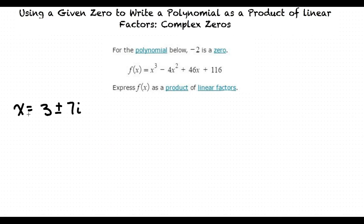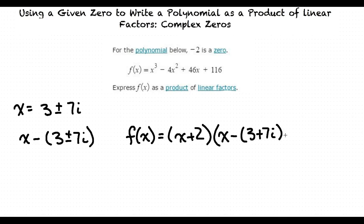Because we get x equals 3 plus or minus 7i, another factor we have is x minus 3 plus or minus 7i. So our function or polynomial f(x) equals x plus 2 times x minus 3 plus 7i times x minus 3 minus 7i.